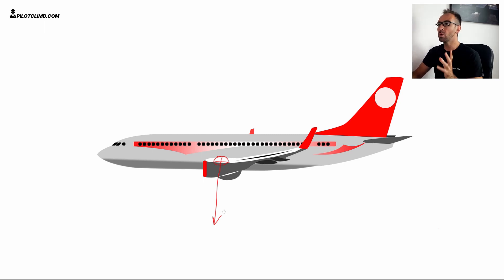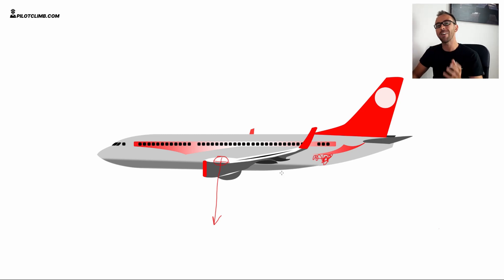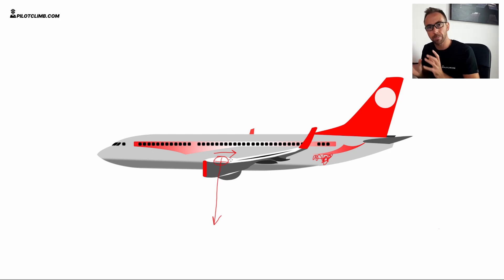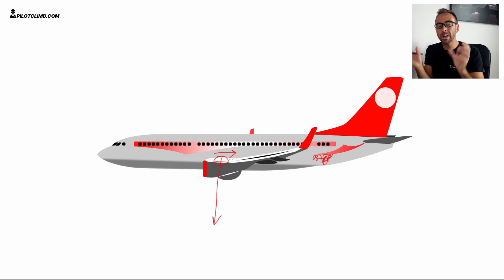What will happen to the center of gravity of this Boeing 737 if we put a lot of weight at the back — on the aft cargo compartment, for example? Since you're putting a lot of weight at the back, the center of gravity will actually move aft, because you are concentrating more weight at the back of the plane. And the opposite is also true: if you put a lot of weight at the front, the center of gravity will move forward. It really depends where the weight is concentrated to make the center of gravity move.